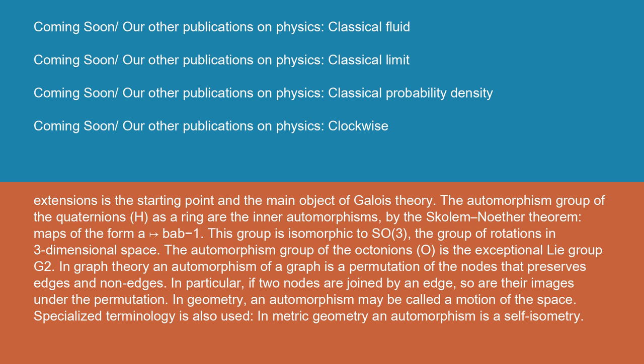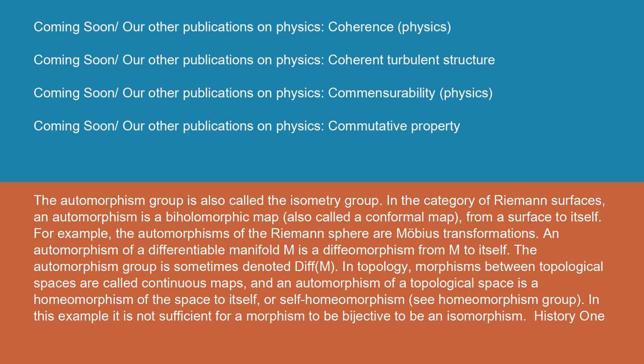In graph theory, an automorphism of a graph is a permutation of the nodes that preserves edges and non-edges. In particular, if two nodes are joined by an edge, so are their images under the permutation. In geometry, an automorphism may be called a motion of the space. Specialized terminology is also used. In metric geometry, an automorphism is a self-isometry. The automorphism group is also called the isometry group.